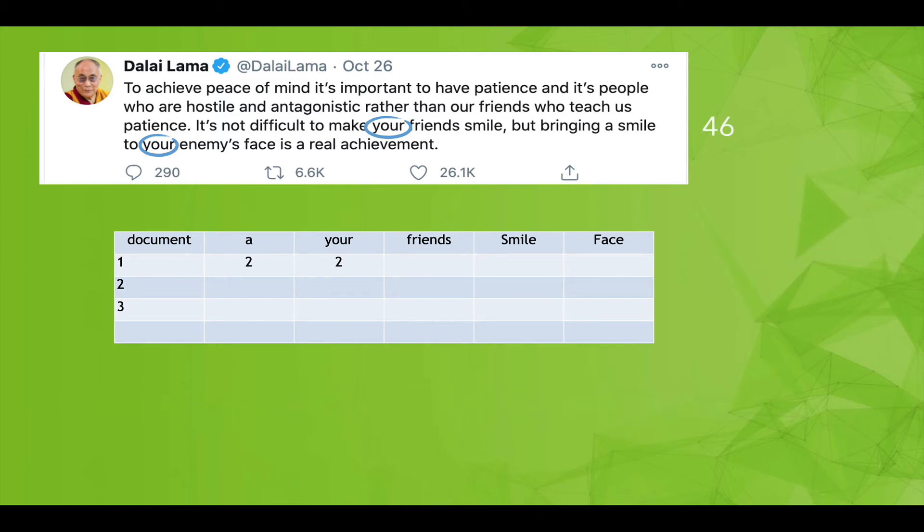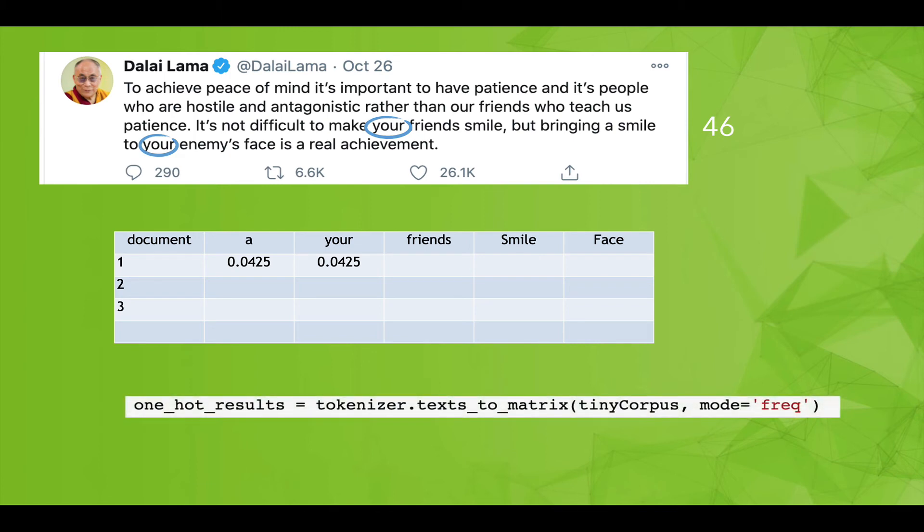Now, the problem is that this text is 46 words long. Maybe it's better to use the frequency. So instead of two there, we would do whatever two divided by the total number of words, 46, is. And so we could convert it to frequencies. And that would look like this. And that command in Keras is this, we just say mode equals frequency and get the frequency. So in our document one there, about 4% of our words are 'a' and 4% 'your'.